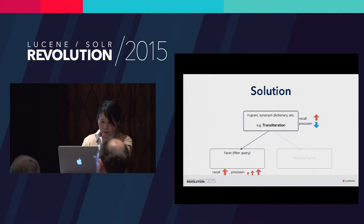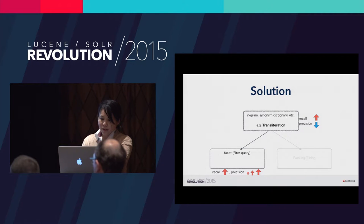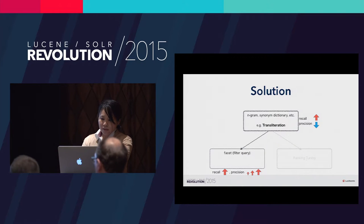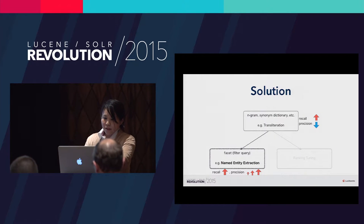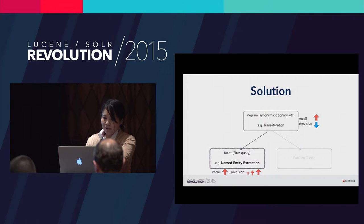In order to improve recall, there are several methods in Lucene and Solr, such as using N-gram instead of a morphological analyzer, or using a synonym dictionary. Here, I will briefly introduce transliteration as an NLP tool that may be used to improve recall. NLP4L has a tool for transliteration, which I'll describe later. Now, we also need to improve the decreased precision. To do that, we can use facet and filter queries, but these tools aren't always available. I'll explain the reason why in the next few slides.